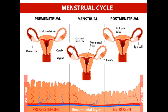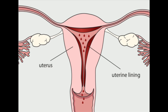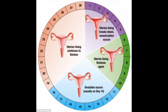The follicular phase starts on the first day of the period and lasts for 13 to 14 days, ending in ovulation. The pituitary gland in the brain delivers a hormone to stimulate the production of follicles on the surface of an ovary. Usually only one follicle will mature into an egg. This can happen from day 10 of the cycle.